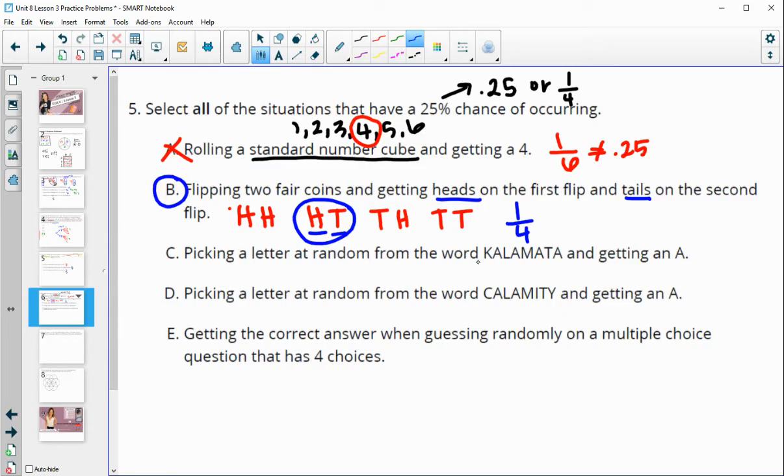Picking a letter at random from the word Kalamata and getting an A. So how many A's do we have? So we have four A's out of 1, 2, 3, 4, 5, 6, 7, 8 letters. And four out of eight simplifies to one half, which is a 50% chance, not a 25% chance.